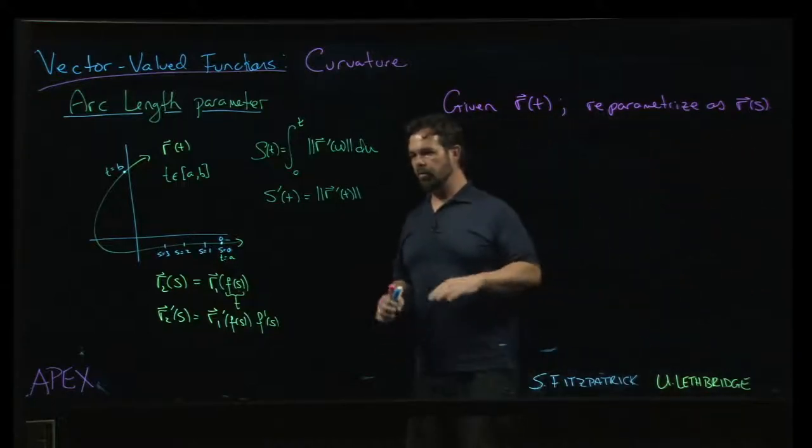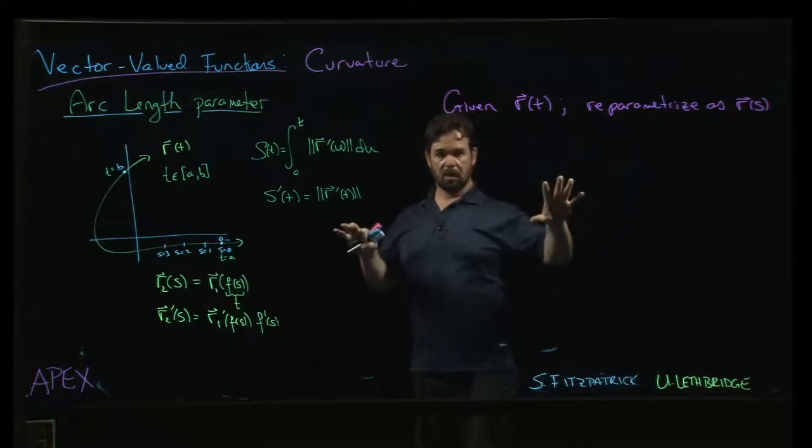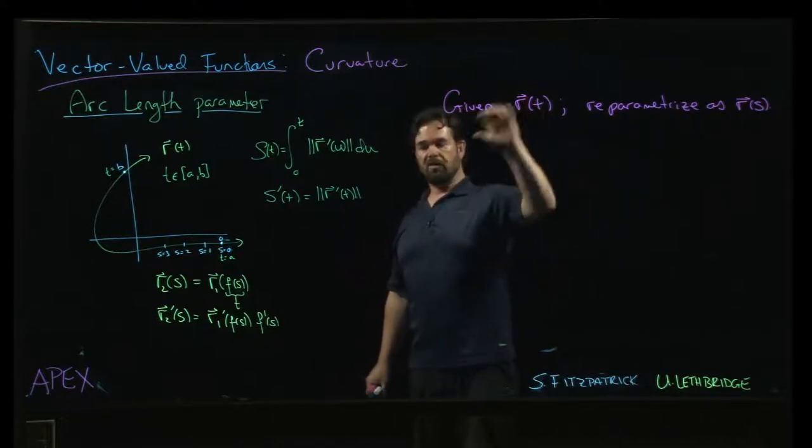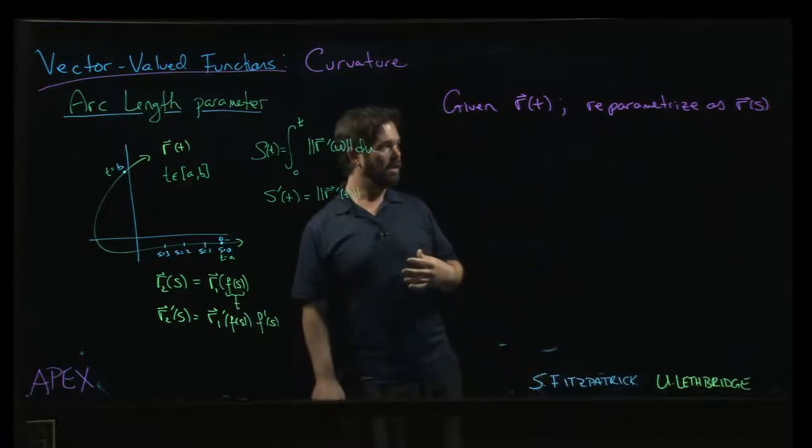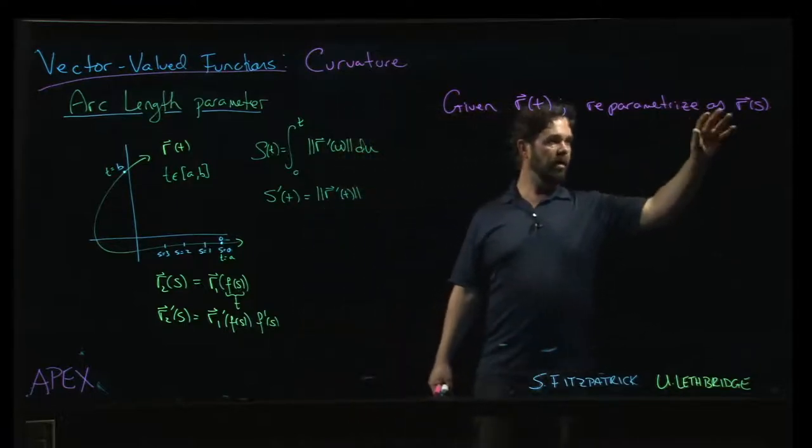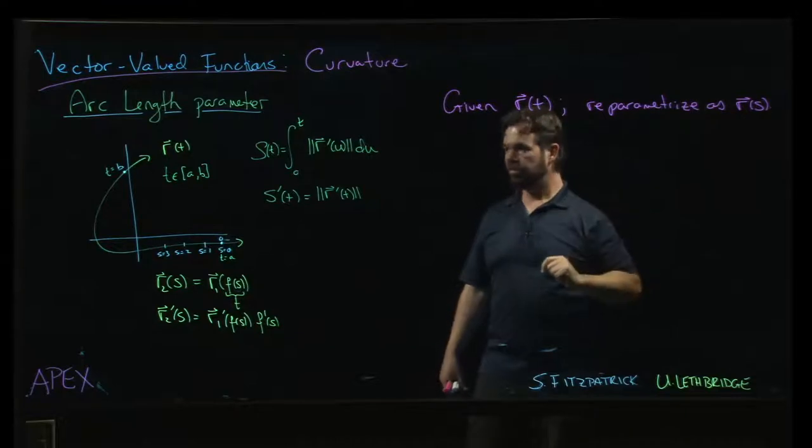So the next thing we want to do is play around a little bit more with what goes on when we use this arc length parameter. Somebody gives us a vector valued function R of T. We're going to reparametrize using the arc length parameter S.